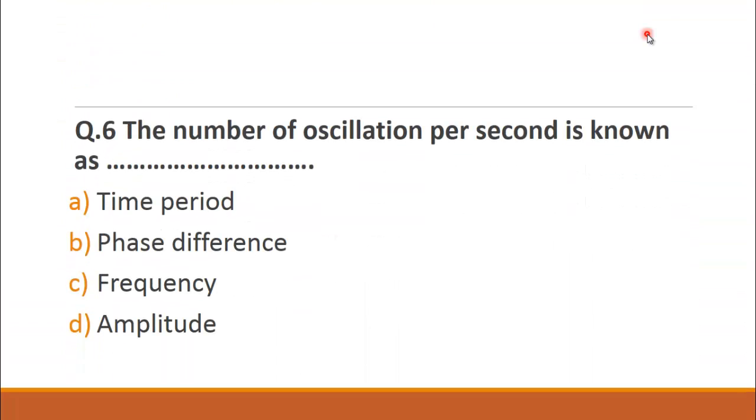MCQ number six is: The number of oscillations per second is known as? The choices are A. time period, B. phase difference, C. frequency and D. amplitude. So it is clear that it is C. frequency.